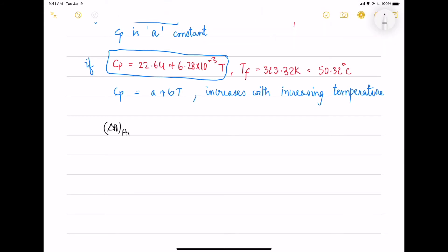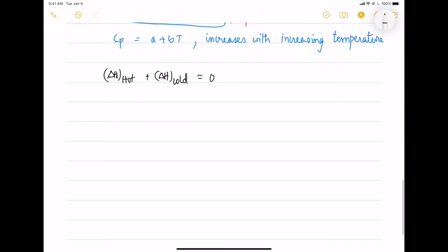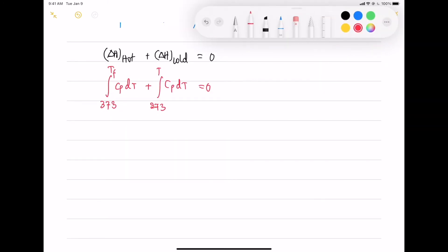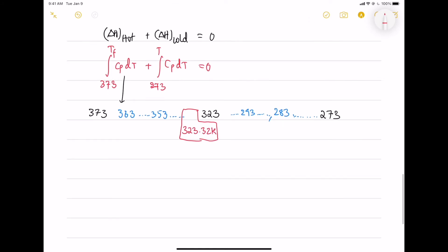Let's see in another perspective. If I write these two terms, I have integral CP DT for hot and cold and the hot goes from 373 and let's take the expected average value 323 and 273 for the cold. The hot cools down slowly and the cold heats up to higher temperature.